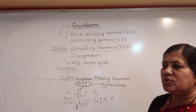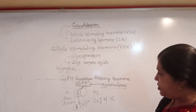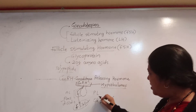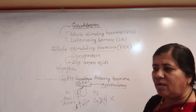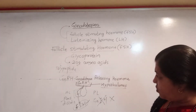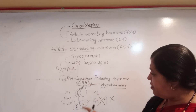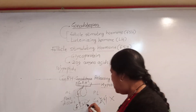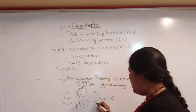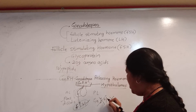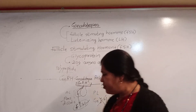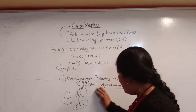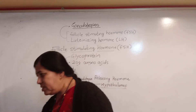There is a GnRH to start and stimulate FSH secretion. However, there is no gonadotropin inhibiting hormone from the hypothalamus, so hypothalamus can release FSH hormone but there is no GNIH — gonadotropin inhibiting hormone — released from hypothalamus to stop its secretion.